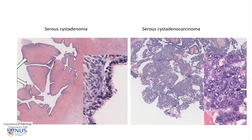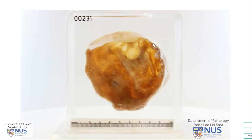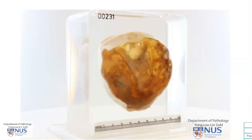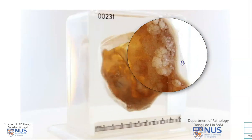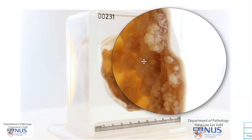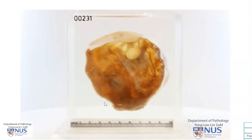So serous cyst adenomas have a benign clinical course, whereas serous cyst adenocarcinomas or serous carcinomas behave in a malignant fashion. In summary, we have here a unilocular ovarian cyst that is fairly large, about 9 cm in maximal dimension. We can see fine papillary projections or excrescences in the cyst wall projecting into the cyst lumen. There is no evidence of solid fleshy areas, invasion through the wall, or any serosal deposits. This is an ovarian serous cyst adenoma. Thank you.